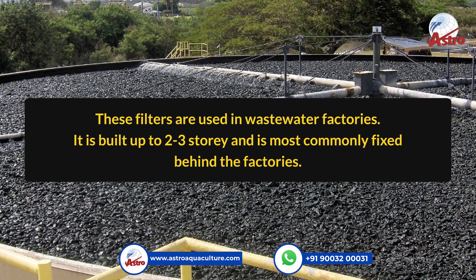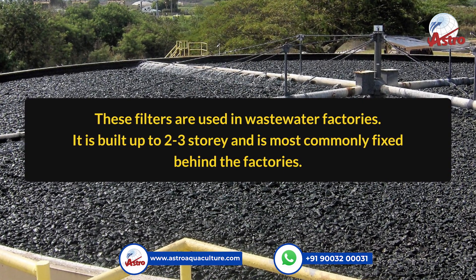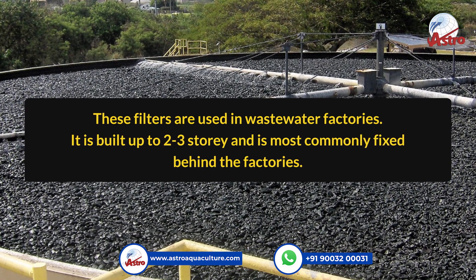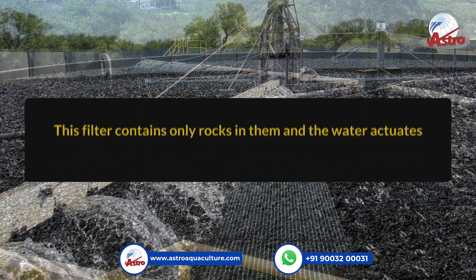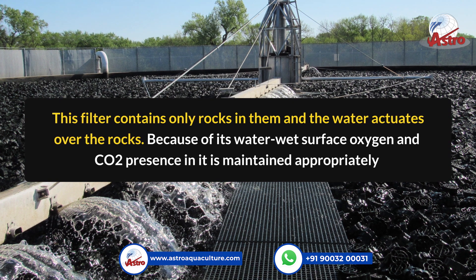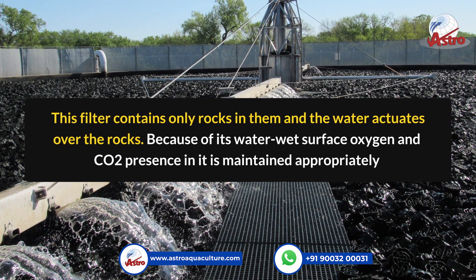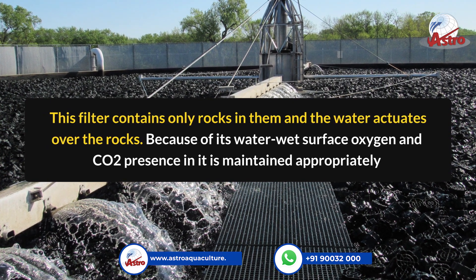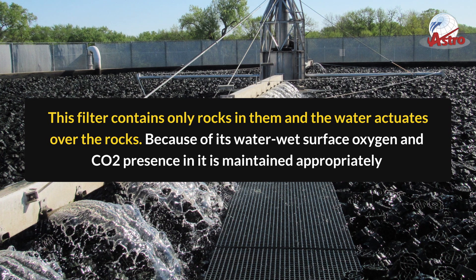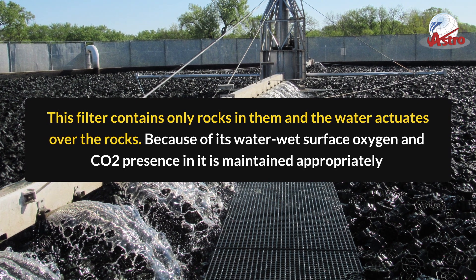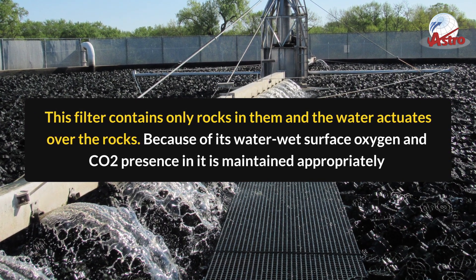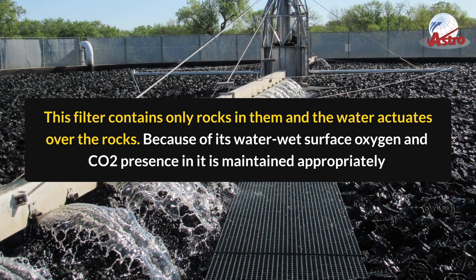The trickling filter is built up to 2-3 storeys and is most commonly fixed behind the factories. This filter contains only rocks, and the water actuates over the rocks. Because of its wet water surface, oxygen and CO2 presence in it is maintained appropriately.